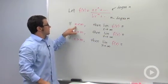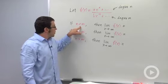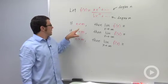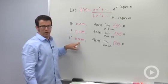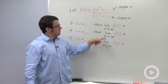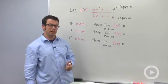Now we have three cases. Either the degree of the numerator is smaller than the degree of the denominator, it's equal, or it's greater. And in each of those cases, something different will happen with the limit of this function as x goes to infinity.